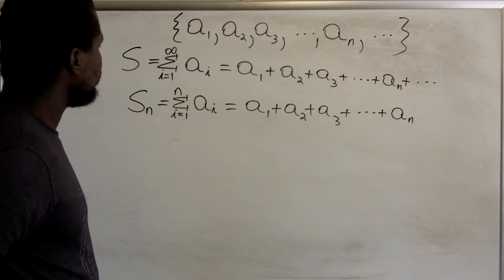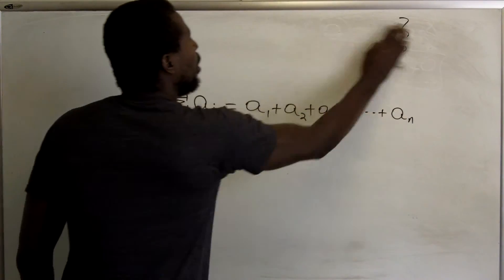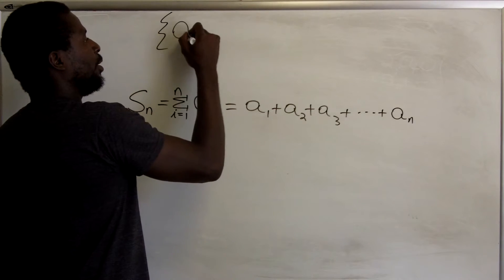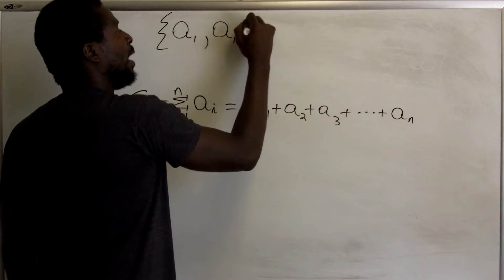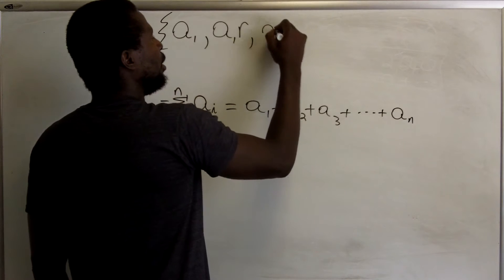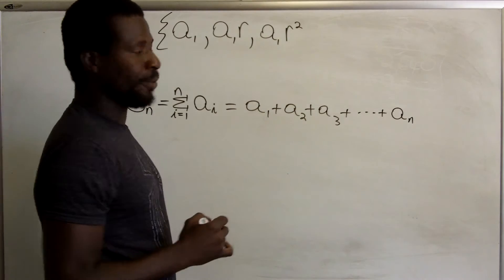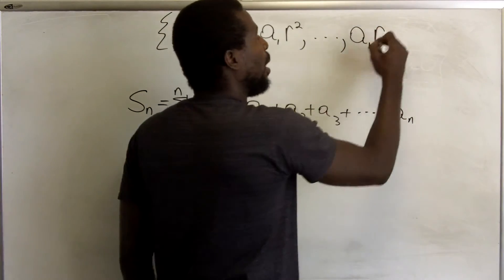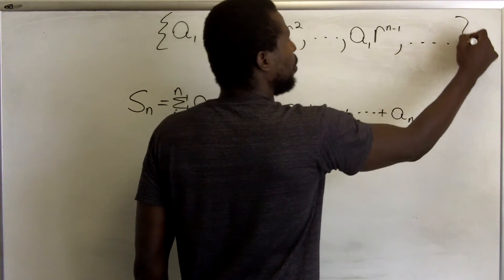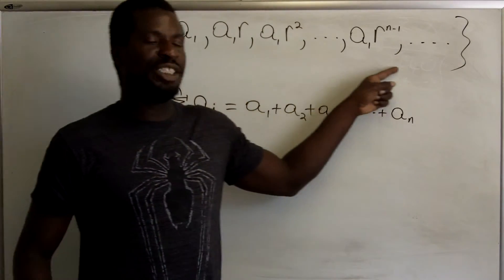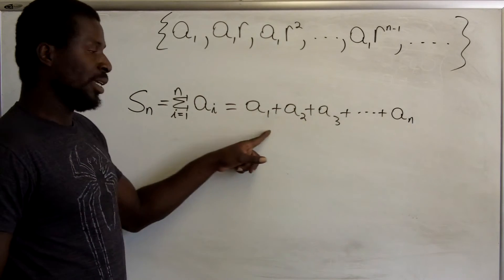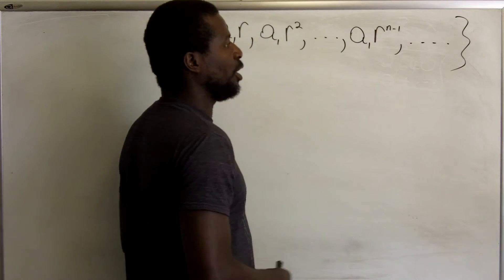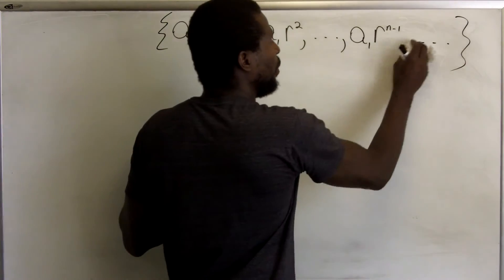What we're going to discuss is the nth partial sum of specifically the geometric sequence. The geometric sequence looks like this: the first term is a1, the second term is a1 multiplied by a common ratio r, the third term is a1 multiplied by r squared, and so on until a_n, which is a1 multiplied by r to the power of n minus 1. You could continue all the way to infinity.